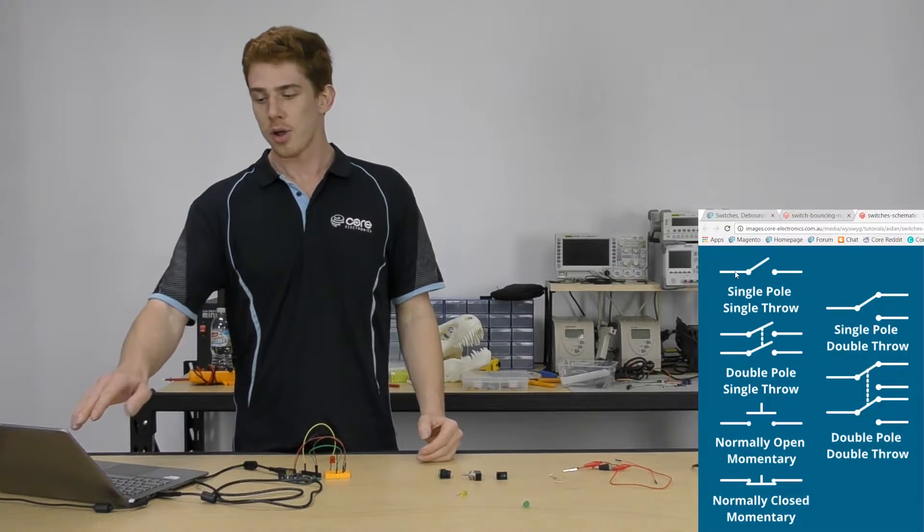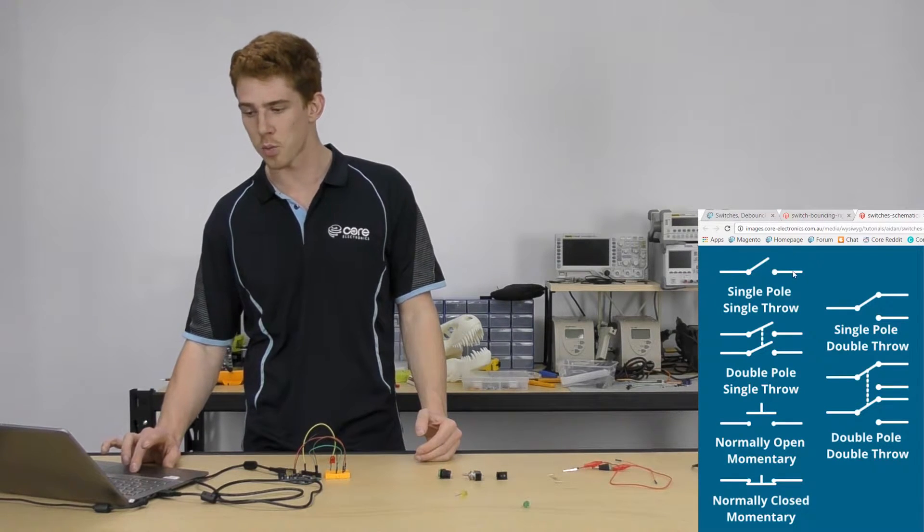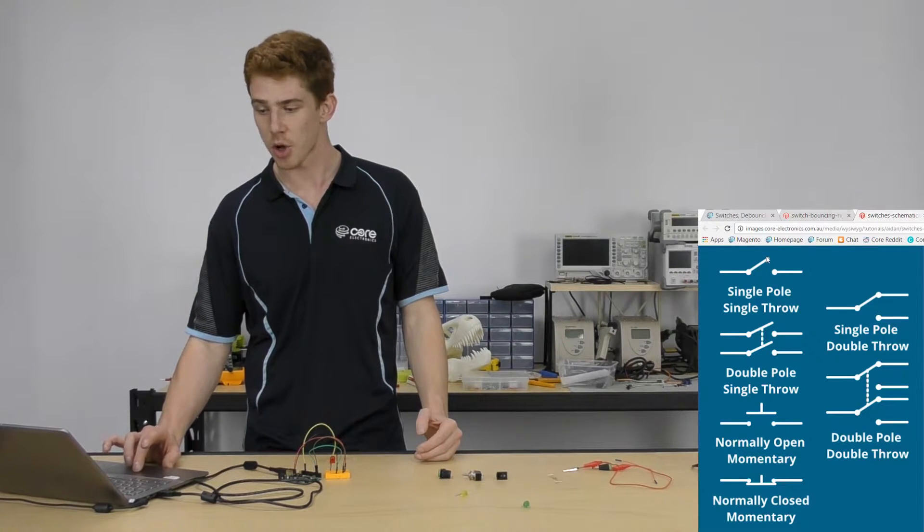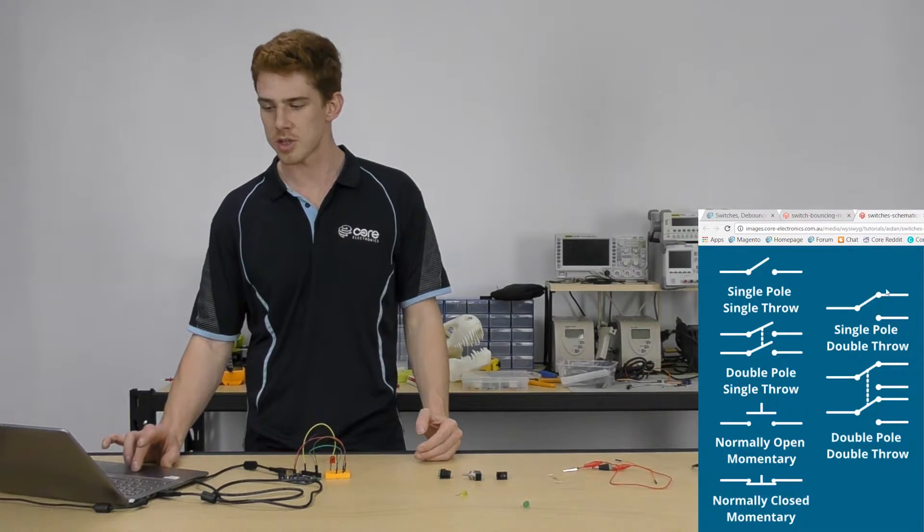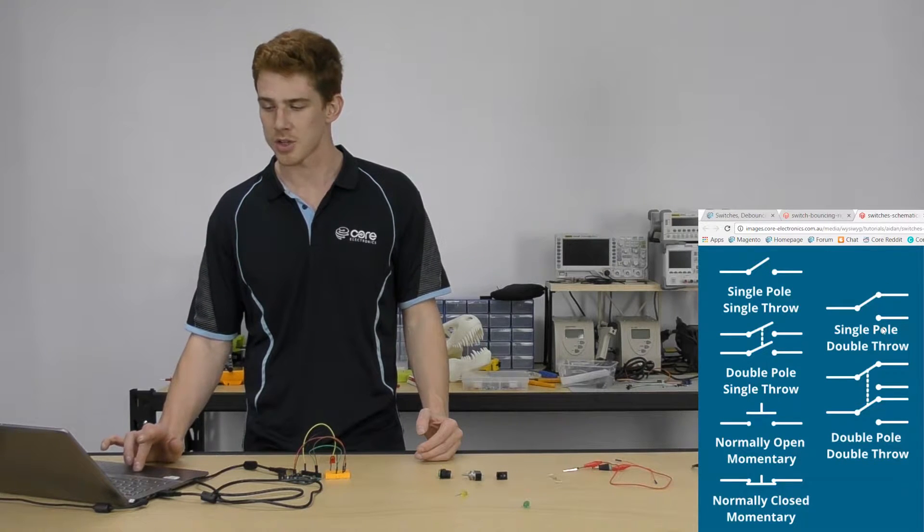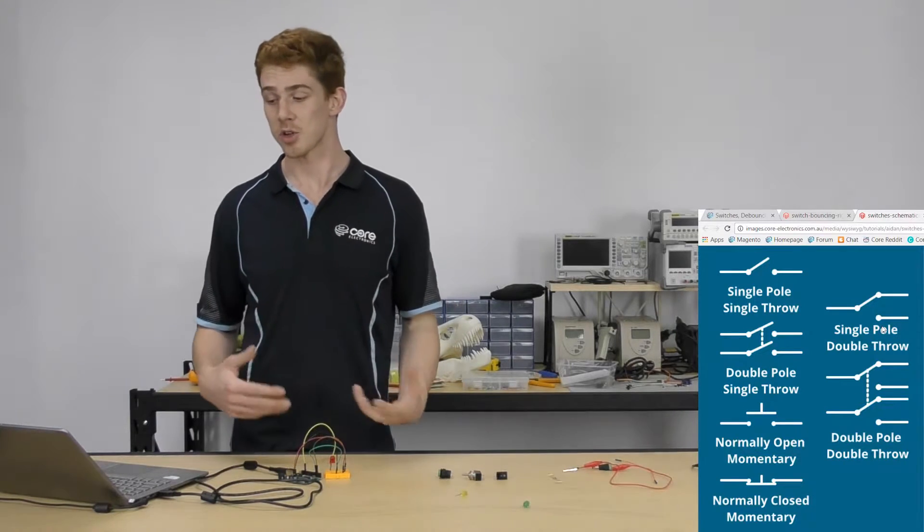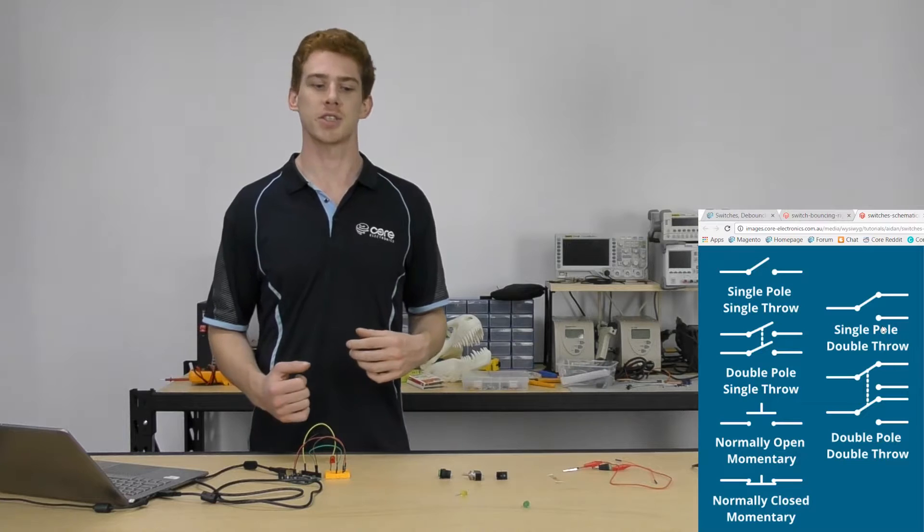With a single throw, you can see on the left here that it only has one position that it can be in. So the switch is either open or it's closed. Whereas this is controlling two circuits on the double throw side, and it can be on for that circuit or on for that circuit. Being on for one circuit means it's off for the other circuit, unless you put a double throw circuit in which case you can manage that.